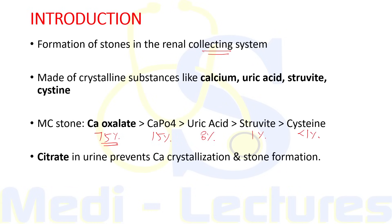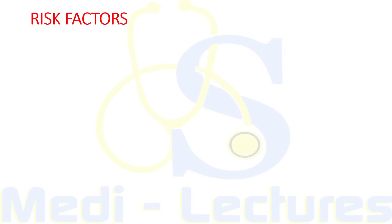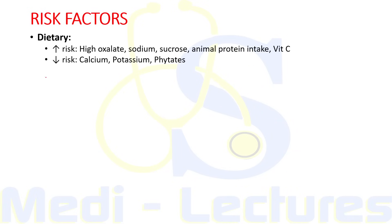Citrate in urine normally prevents calcium crystallization and stone formation. Stones are a common cause of acute flank pain. Risk factors of renal calculi are divided into dietary risk factors, non-dietary risk factors, urinary risk factors, and some other risk factors. There is increased risk of nephrolithiasis in patients who have a diet rich in oxalate, sodium, sucrose, animal protein, and vitamin C.